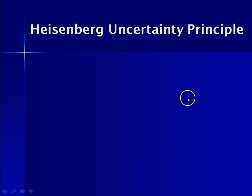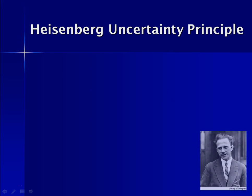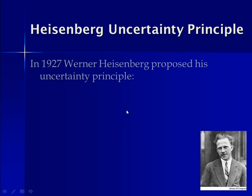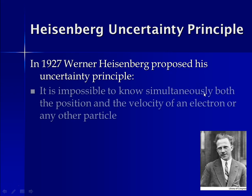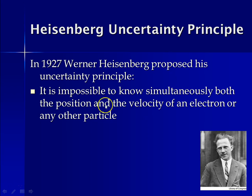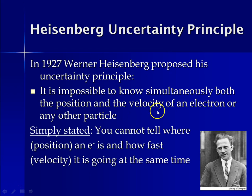The last concept is Heisenberg's uncertainty principle. Werner Heisenberg, in 1927, proposed that it is impossible to simultaneously know both the position and the velocity of an electron or any other subatomic particle. Simply stated, you can't know where an electron is and how fast it's going at the same time.